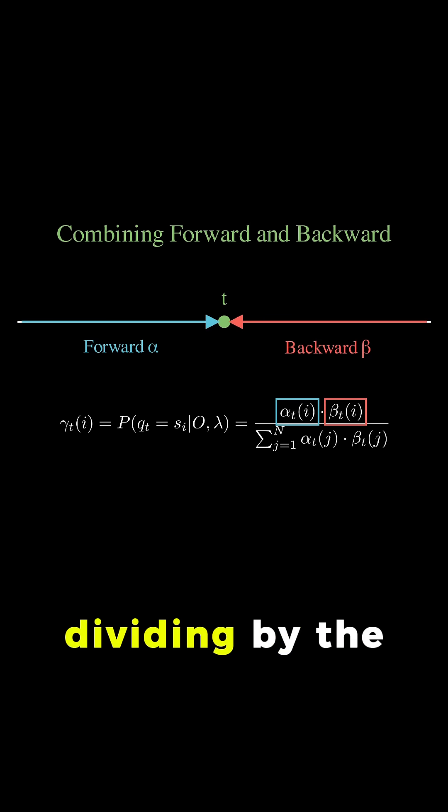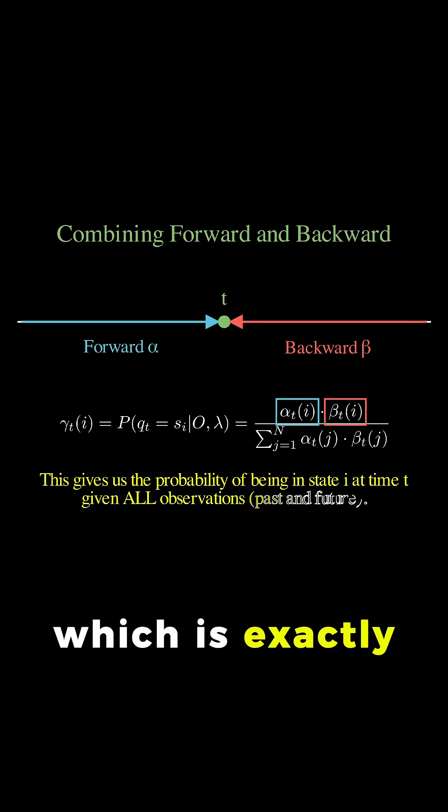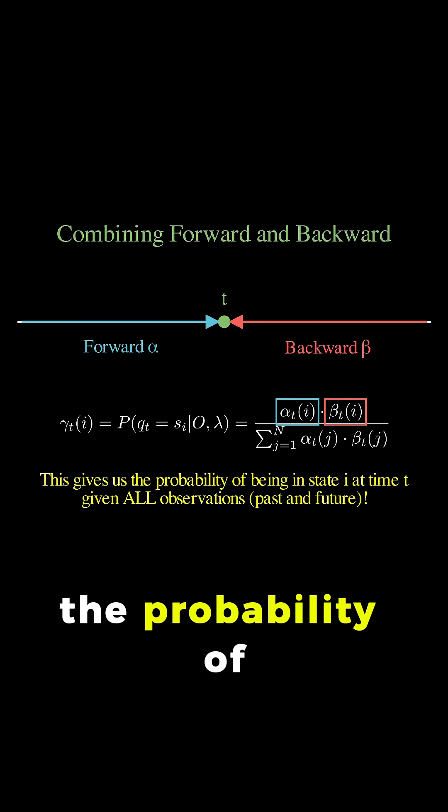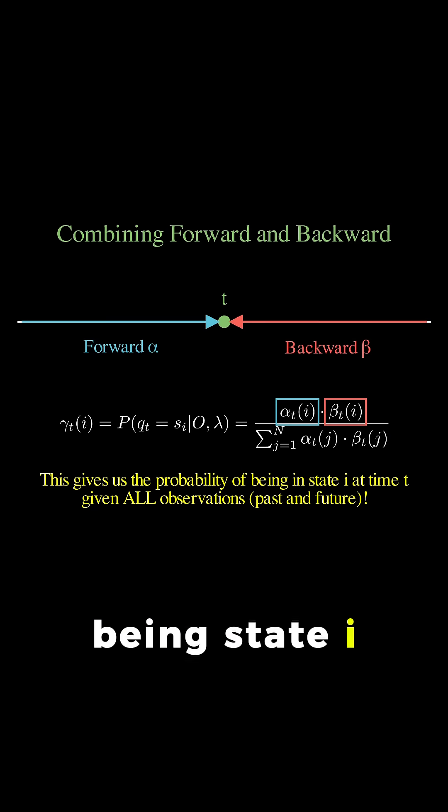And if we normalize this by dividing by the sum over all states, we get gamma t of i, which is exactly what we wanted: the probability of being in state i at time t given all the observations.